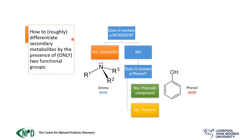You can roughly differentiate secondary metabolites just by the presence of two functional groups: the amines or the phenols. If you are in front of a compound, you just have to ask: does it contain a nitrogen? If yes, chances are you are in front of an alkaloid. If no, then ask: does it contain a phenol? If yes, you're in front of a phenolic compound. And if the compound fails to have nitrogens or phenols, then chances are you are in front of a terpene.